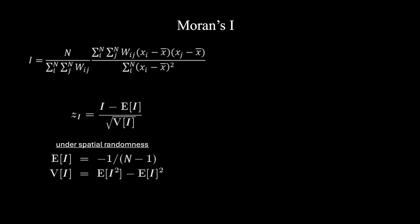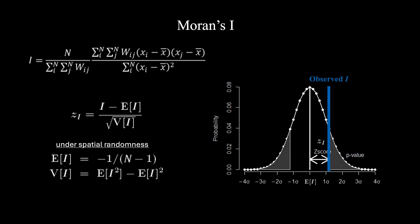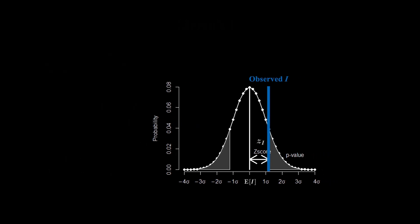Even though the Moran's I statistic for a particular gene may be quite large, we still need to evaluate whether this is larger than what we expect by chance — we need to evaluate its statistical significance. The expected value and variance for the Moran's I statistic under spatial randomness can be computed. We can therefore compare our observed I statistic for each gene to this theoretical null to derive a z-score and associated p-value from a one-sided test.